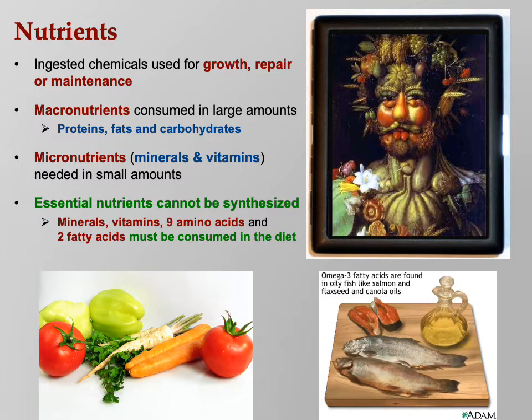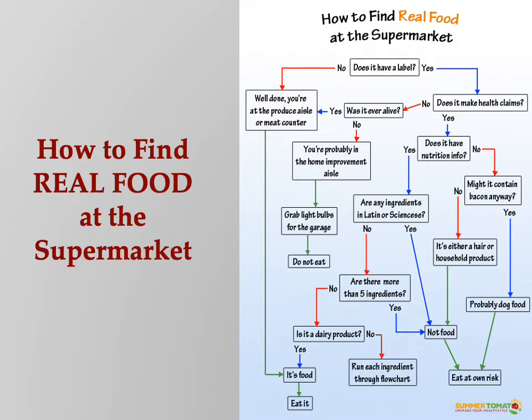The so-called omega-3 fatty acids — we'll talk about those later. How do you find real food at the supermarket? You're supposed to stay around the edges. Does it have a label? No — you're at the produce aisle or the meat counter. Does it have a label? Yes — watch out, especially if it's making health claims.